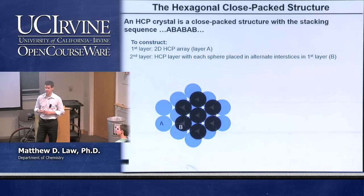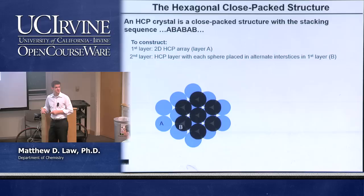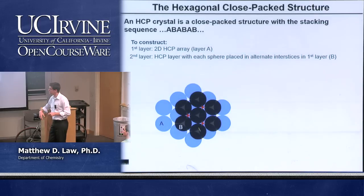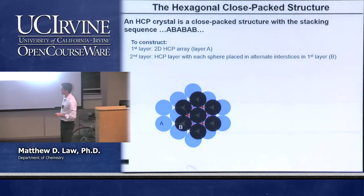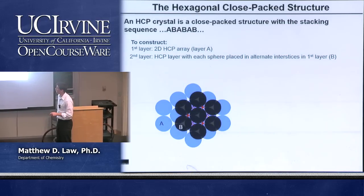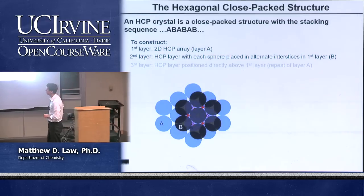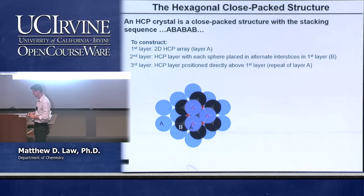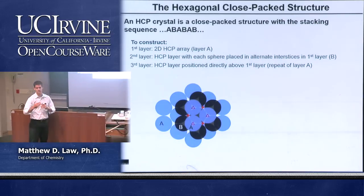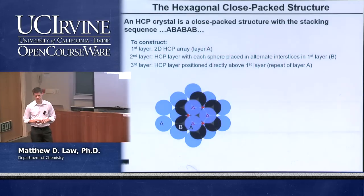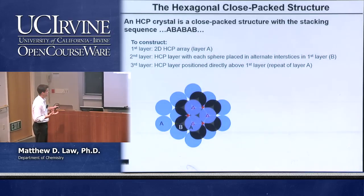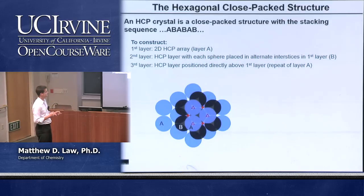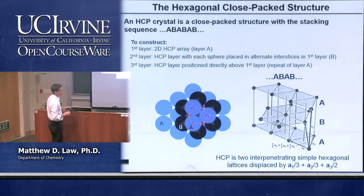The critical question is what to do with the third layer. There are two different sets of holes: positions inscribed by squares, or positions inscribed by triangles. If we choose the triangle positions — directly over the first layer — the third layer is back to orientation A. Repeating this ABABAB sequence infinitely generates the hexagonal close-packed structure in three dimensions.